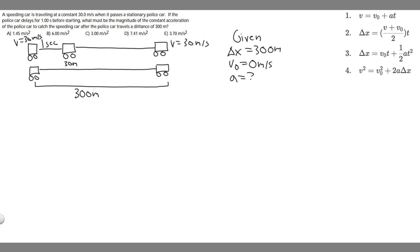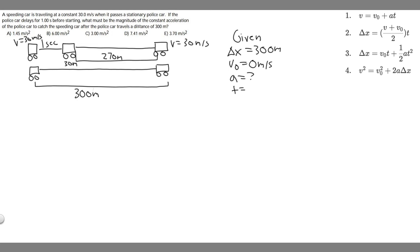There's one more variable we can find based on the other car — we can find time. Think about it: the speeding car is going to be one second ahead, and it's going to be caught after the police car travels 300 meters. The speeding car only needs to travel 270 meters, because it starts 30 meters ahead. So if we find how long it took the speeding car to travel 270 meters, that's the same amount of time it took the police car to travel 300 meters.